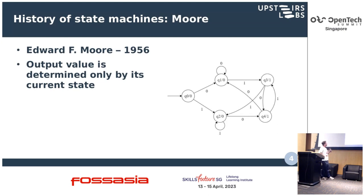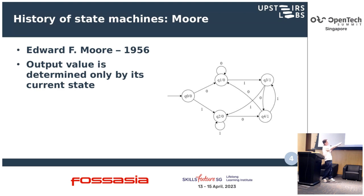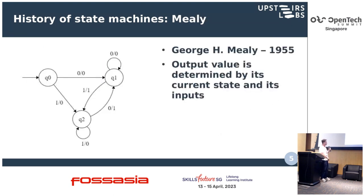Later on we have the Moore machine, which is basically just a representation of a state machine. In those days we were basically doing calculations on tape. We had inputs — ones and zeros — and we have states. The property of the Moore machine is that the output is determined by the current machine state.